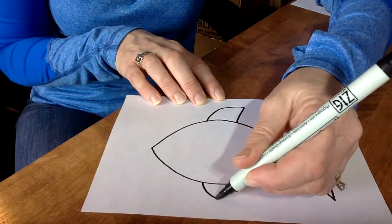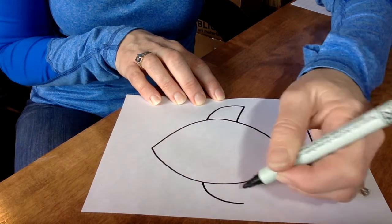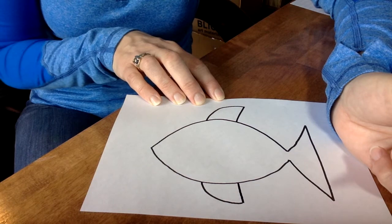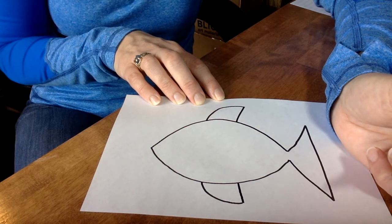Then I'm going to do a curved line on the bottom and a straight line. Those are curved triangles on the side.